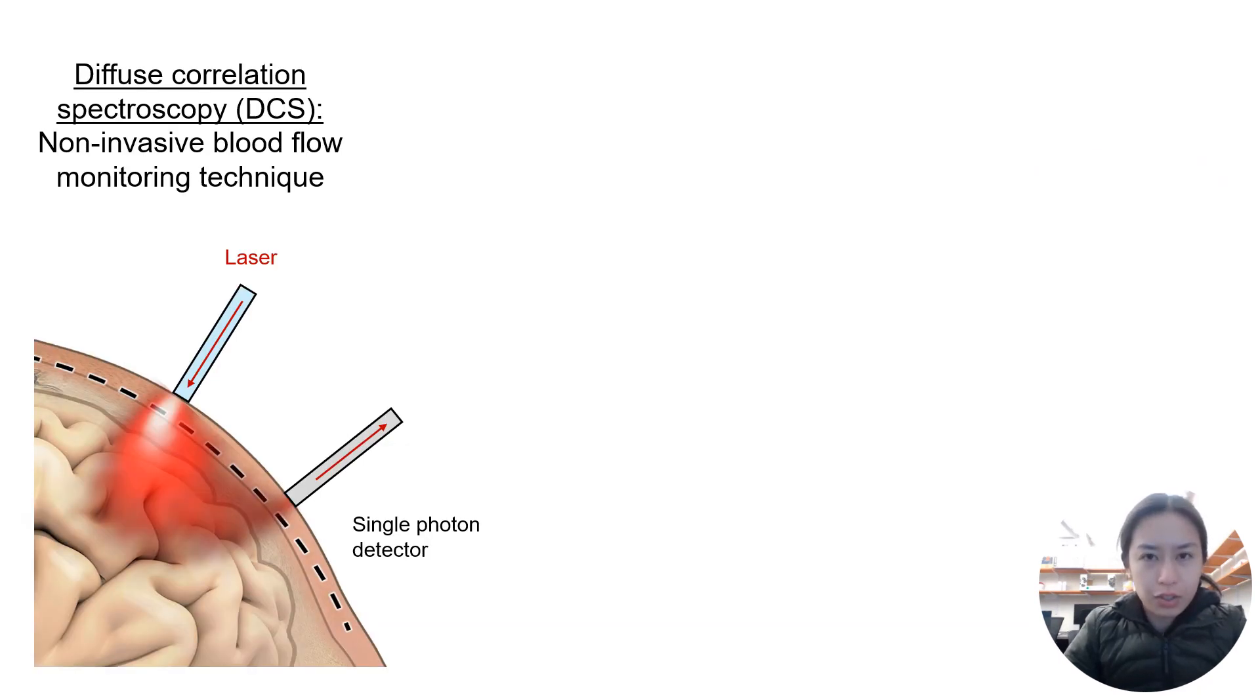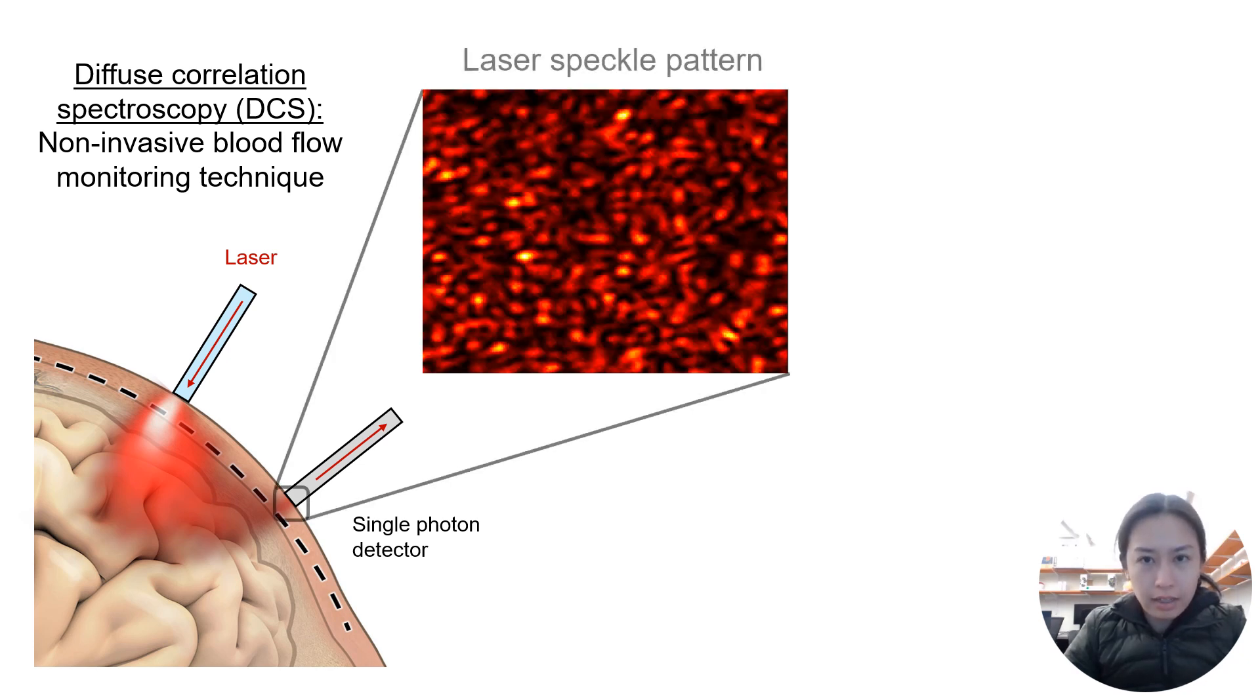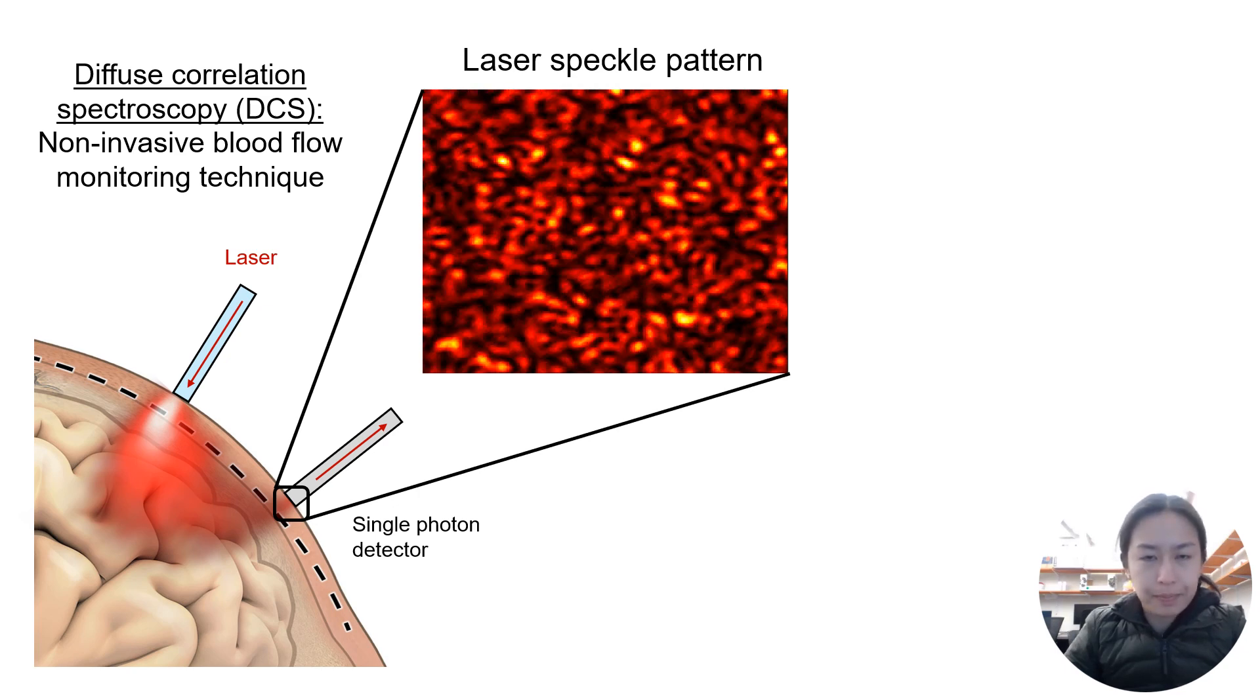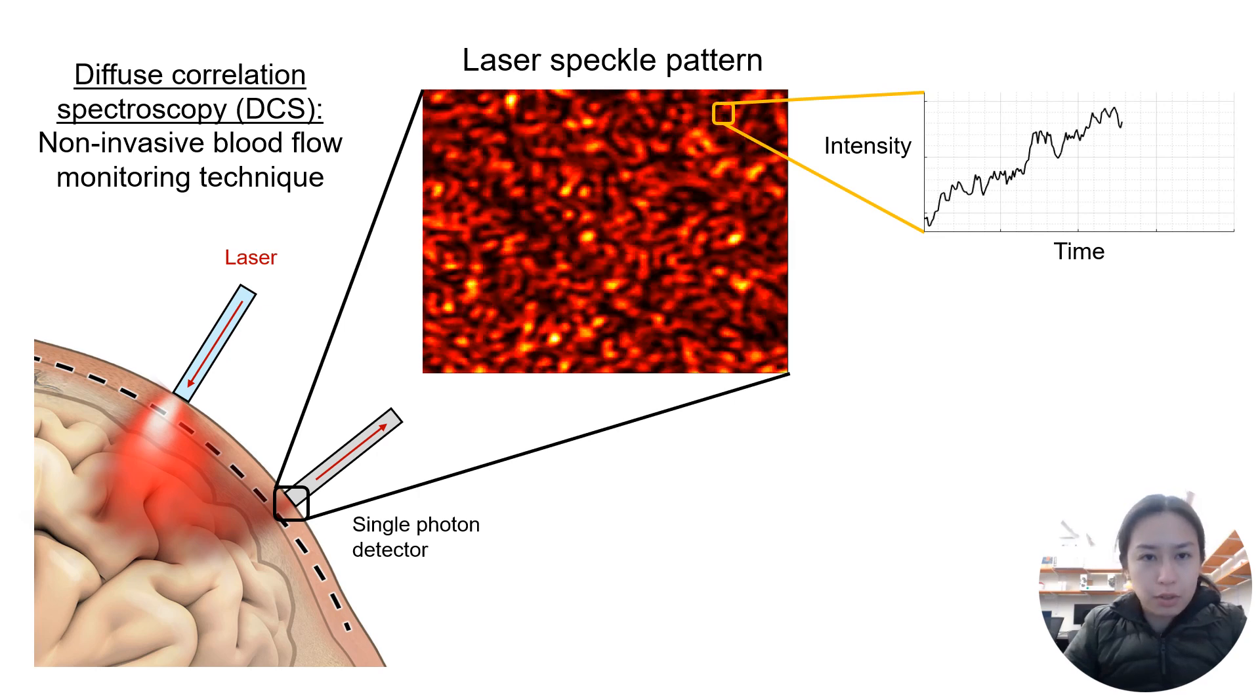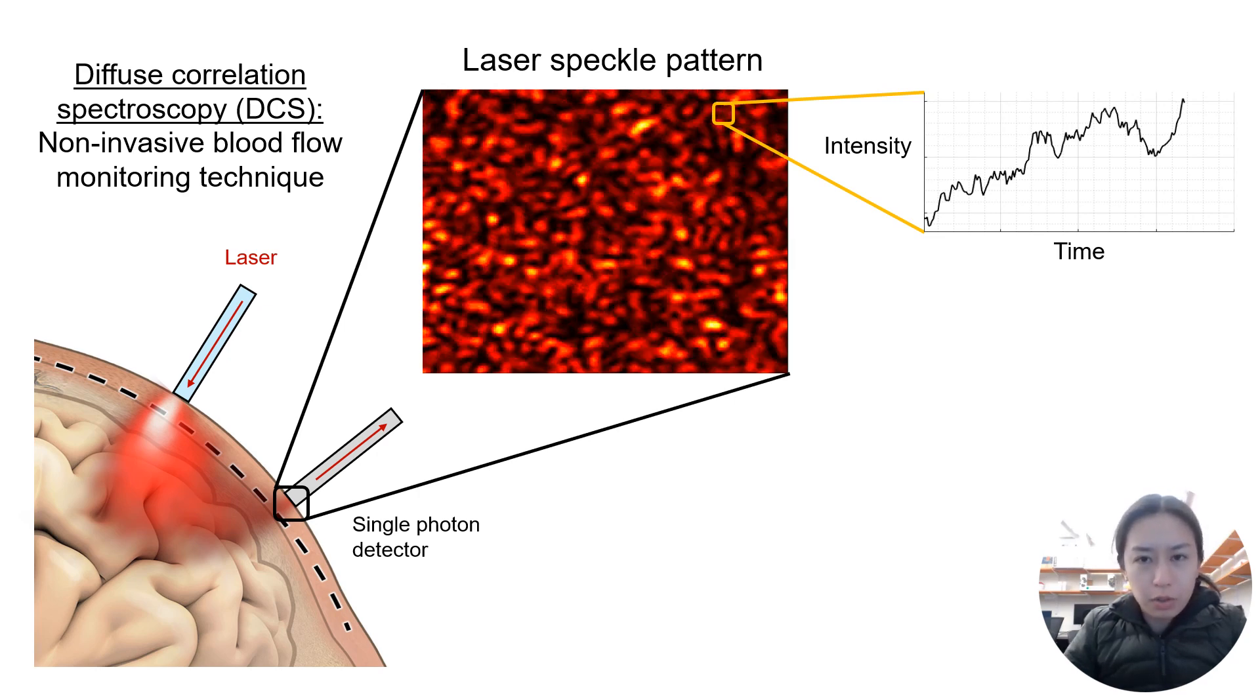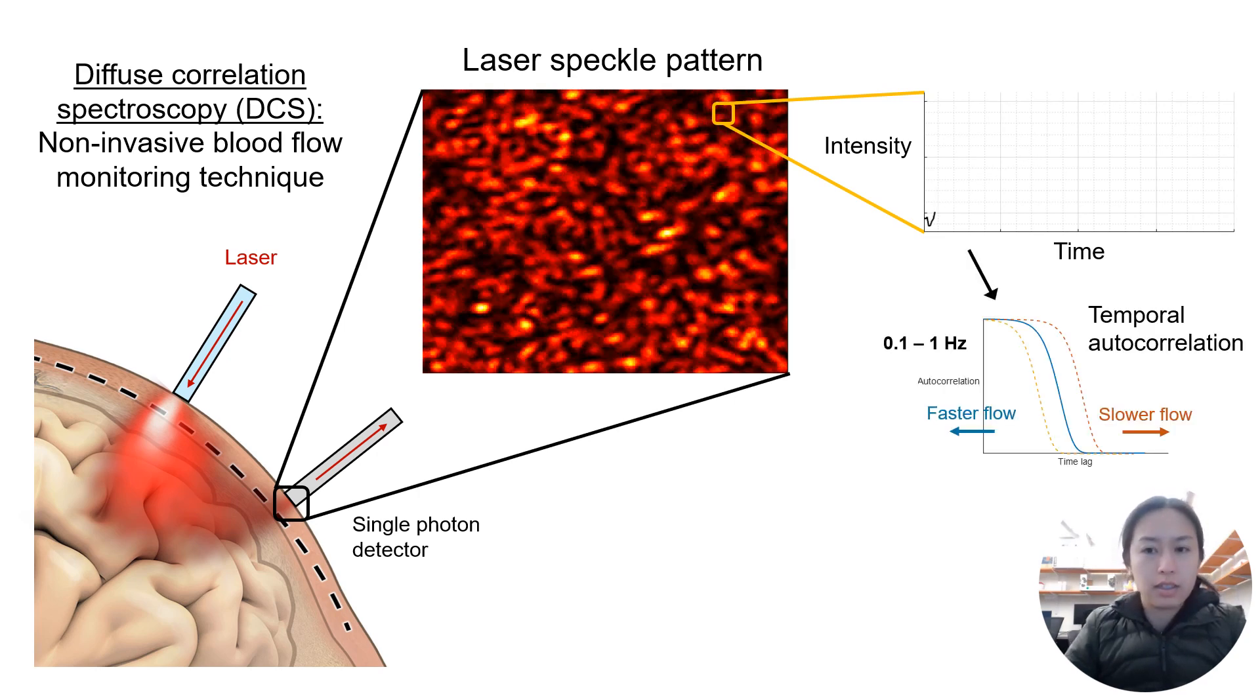DCS is an optical technology used to measure blood flow noninvasively. A long coherence laser is used to deliver light into the head and the laser speckle pattern is detected a few centimeters away. One to several of these speckles are sampled with a single photon detector and the temporal autocorrelation of the detected light intensity is taken.